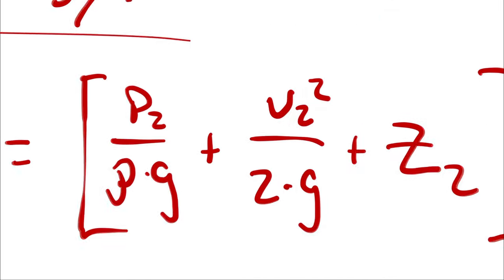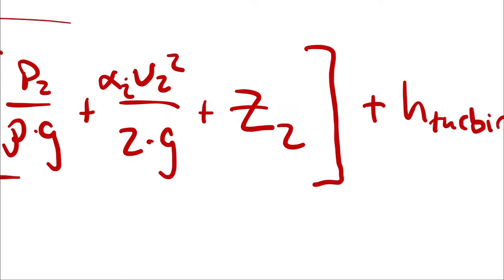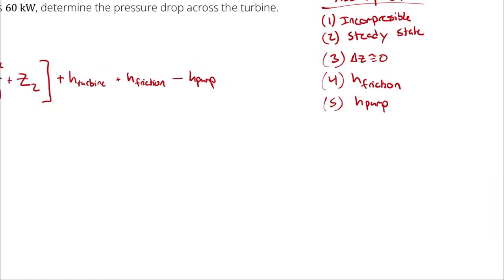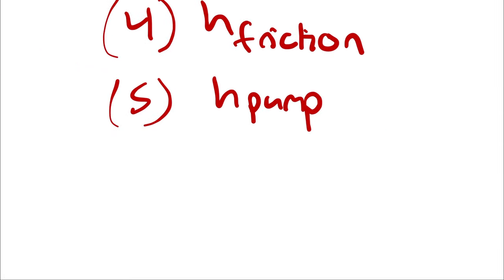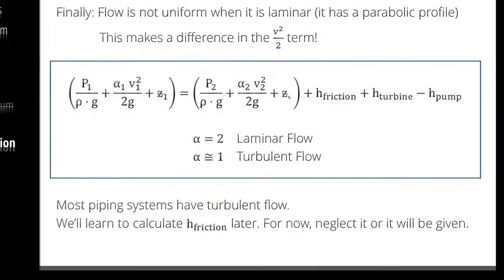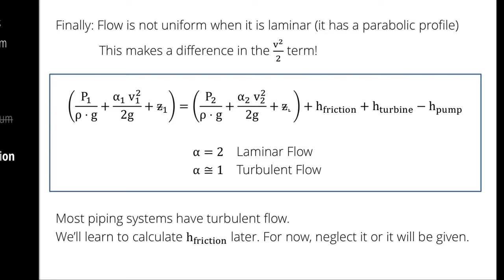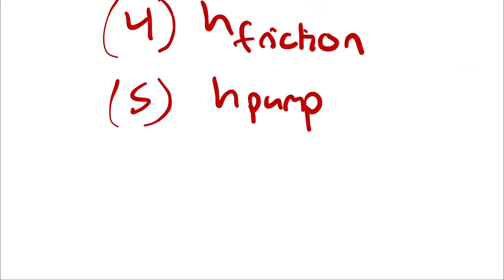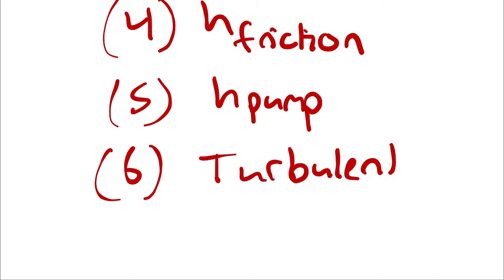I also recognize that I've forgotten alpha. Let's assume that we have turbulent flow. For turbulent flow — if you aren't told enough information to deduce otherwise, it's turbulent for now. Once we start getting the tool set to calculate whether the flow is laminar or turbulent, we can involve that. But for now, if you don't know otherwise, it's turbulent. So if we're treating this as turbulent flow, then alpha is about one.